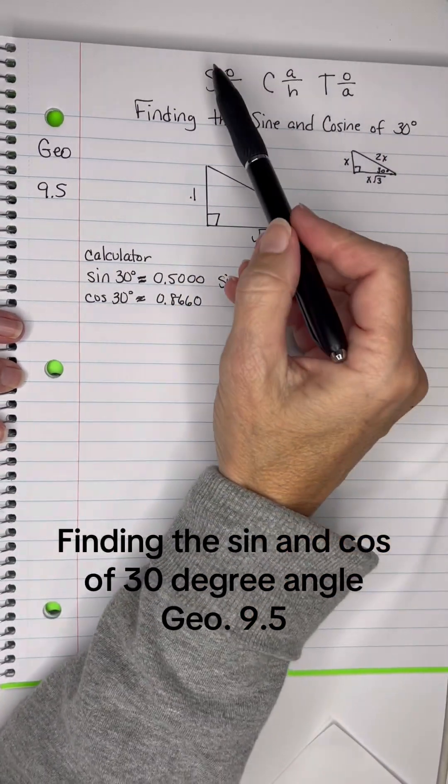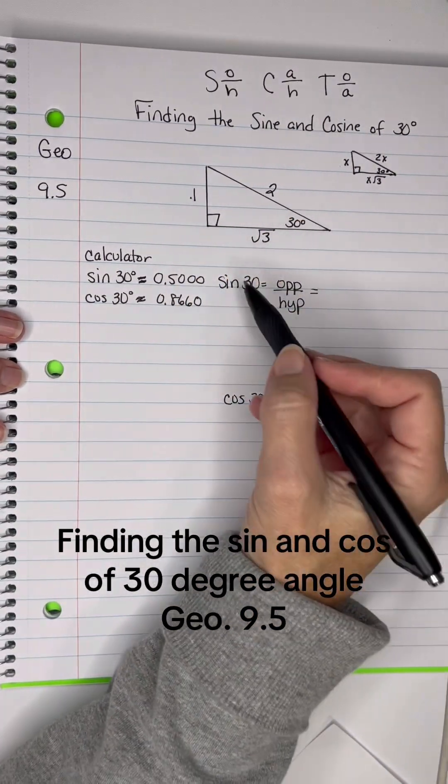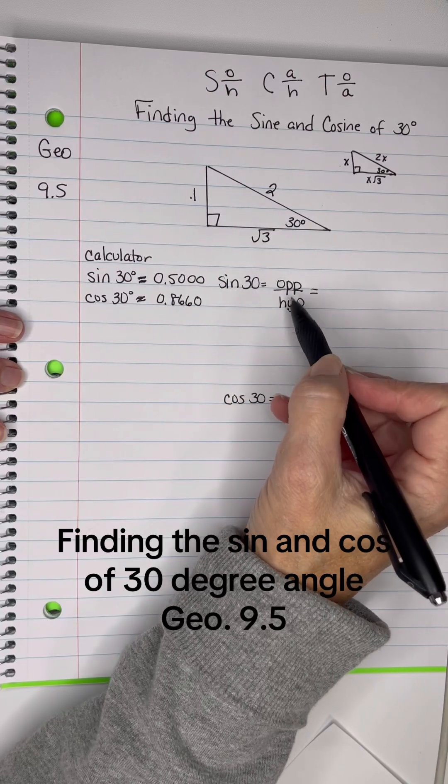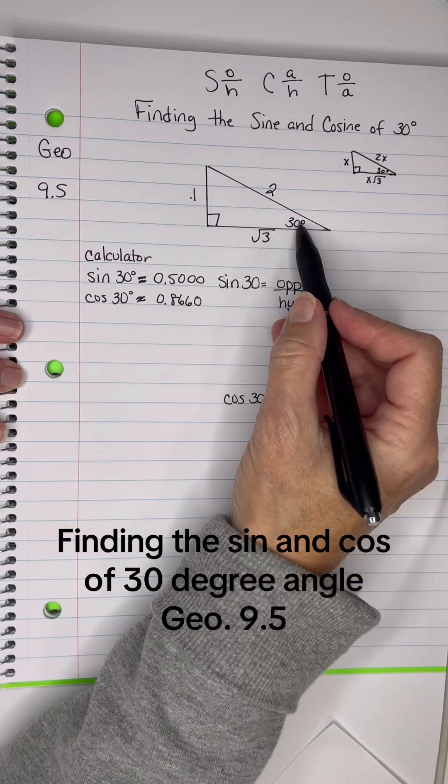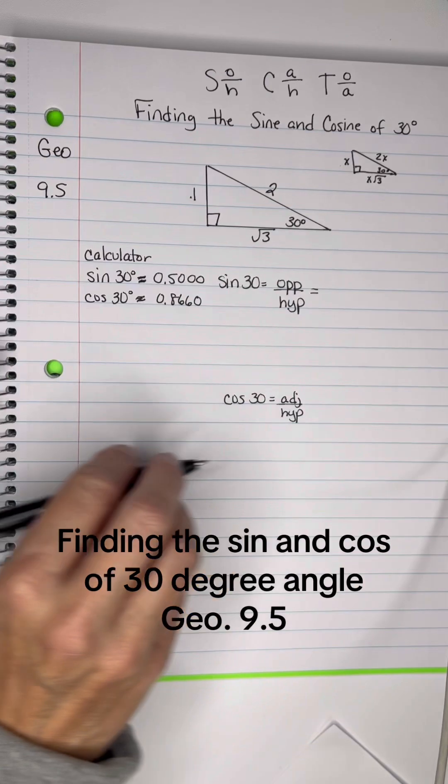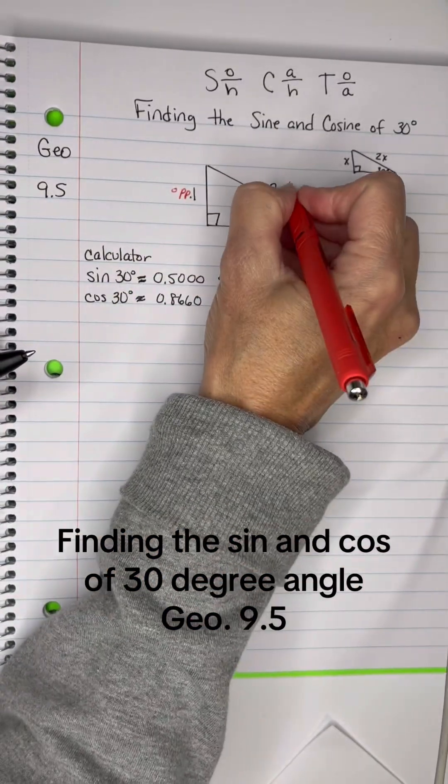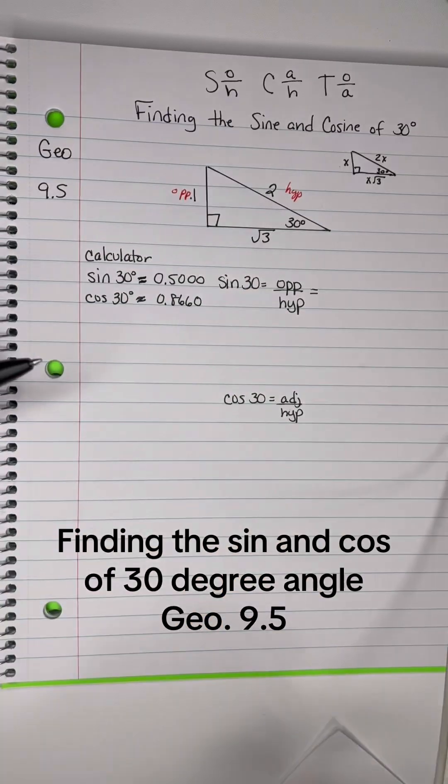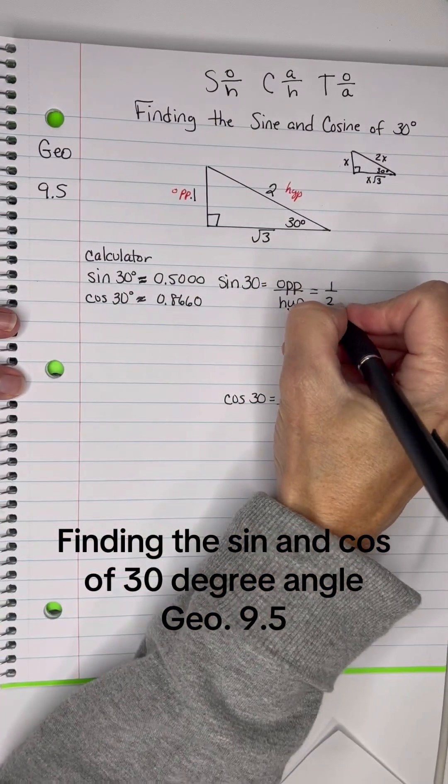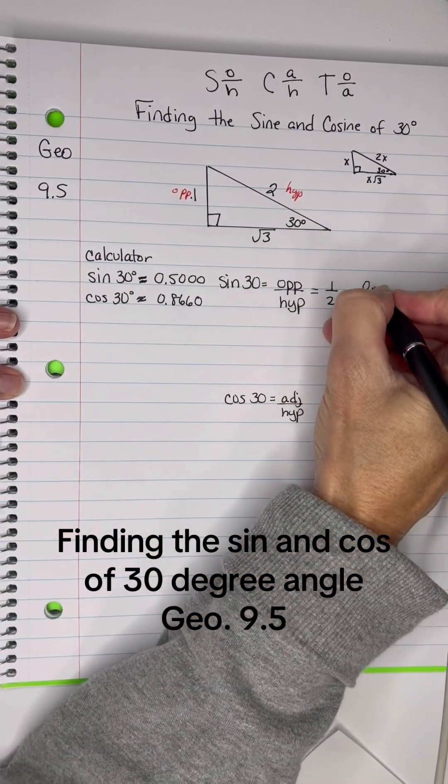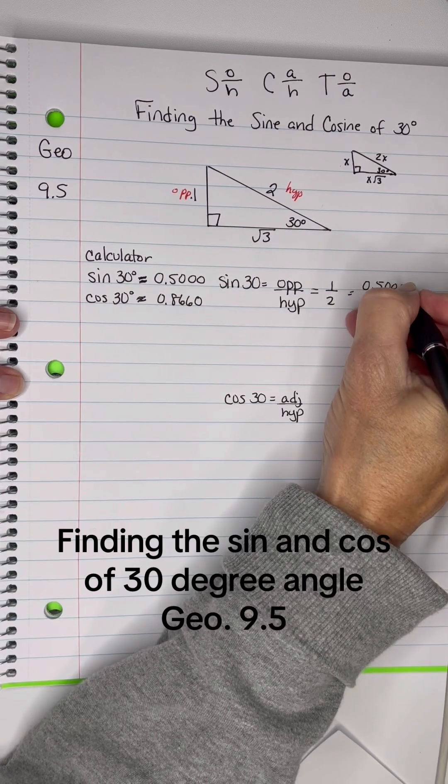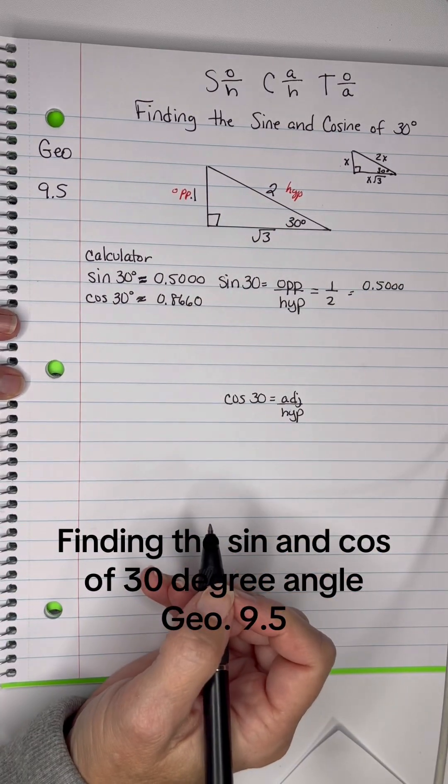In trig, some old hag, sine is opposite over hypotenuse. The opposite of this 30 degrees is this 1, he's the opposite, and this hypotenuse is right here, so I have 1 over 2, and we know that 1 over 2 is 0.5, and we just want 4 places after the decimal.